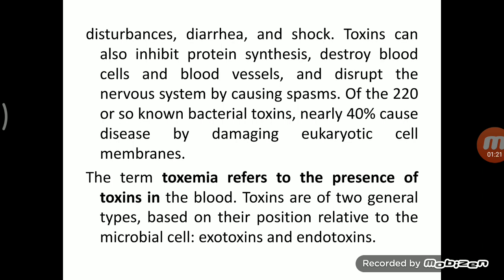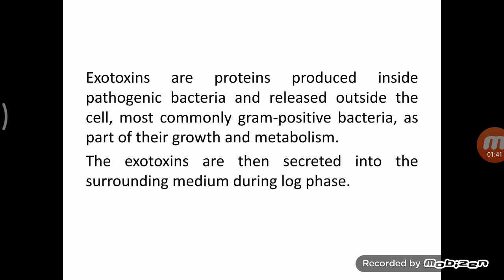Two important terminology: bacteremia means presence of bacteria in the blood, and viremia means presence of virus in the blood. The corresponding term for toxin is toxemia, which refers to the presence of toxin in the blood. There are two types of toxin — exotoxin and endotoxin — and we will discuss each one by one.